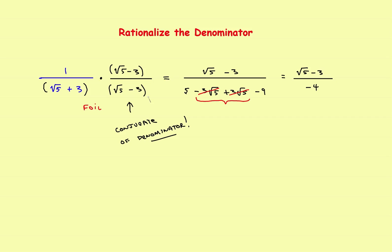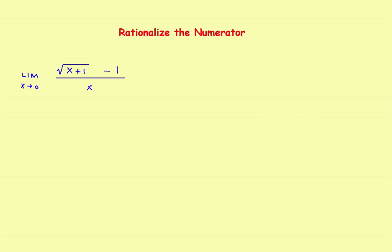Now let's look at a limit problem where we have to use rationalizing the numerator. The problem is to find the limit as x approaches 0. The trouble is, when you try to plug in 0, you wind up with division by 0. So you've got to find some way to get the x out of the denominator. Think of the numerator as being in parentheses, and again, you're going to multiply by the conjugate — but this time the conjugate of the numerator.